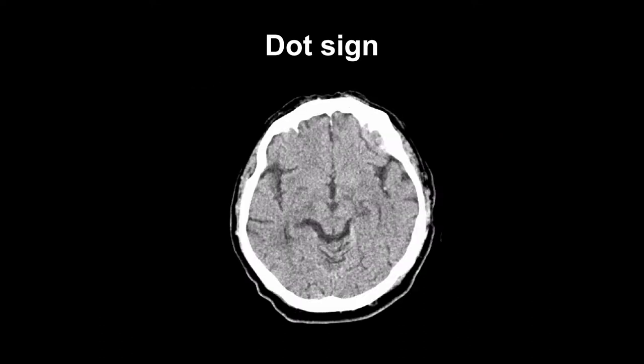This scan demonstrates the dot sign, a variation of the dense middle cerebral artery sign. It indicates a thrombus in the distal middle cerebral artery branches that lie within the sylvian fissure, as indicated by the blue arrow, where they turn perpendicular to the slice.